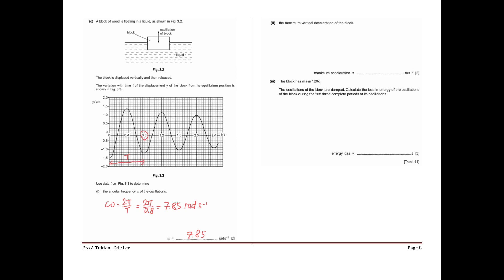One important thing to know about light damping: the amplitude decreases but the period does not change. As you can see from the graph, the second period is another 0.8 seconds, and the next period is also another 0.8 seconds. So the period does not change in light damping.